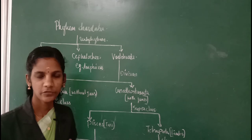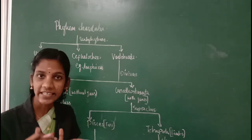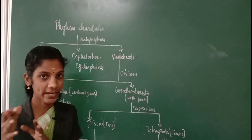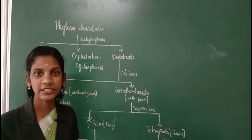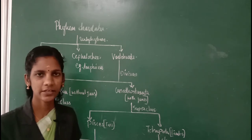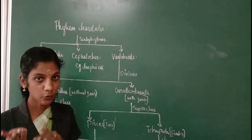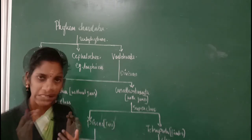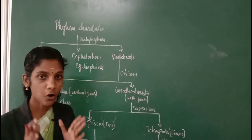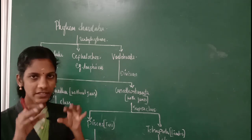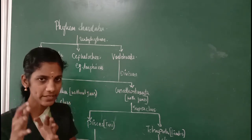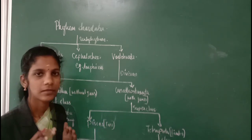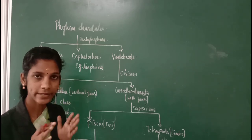Vertebrates will always have paired lateral appendages for locomotion. In the case of fishes, lateral appendages are in the form of fins. In the case of birds, their forelimbs are modified as wings. These appendages help in the locomotion process, and they are modified into different forms based on where the animal lives.